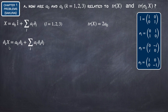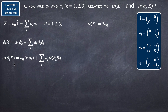We have already obtained the relation between A0 and the trace of X. Now let's write sigma_K times X and then calculate its trace. Sigma_K multiplying X gives A0*sigma_K plus the summation of A_L * sigma_K * sigma_L. The trace of this is A0 times the trace of sigma_K — which is 0 — plus A_L times the trace of sigma_K * sigma_L.